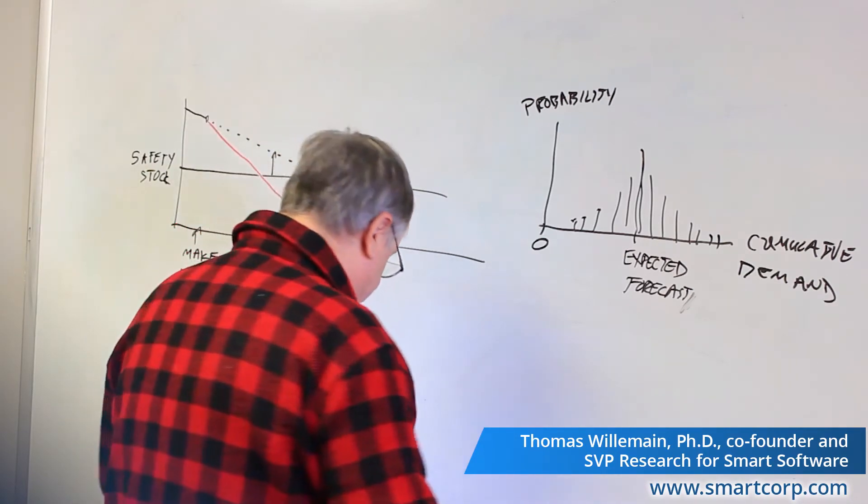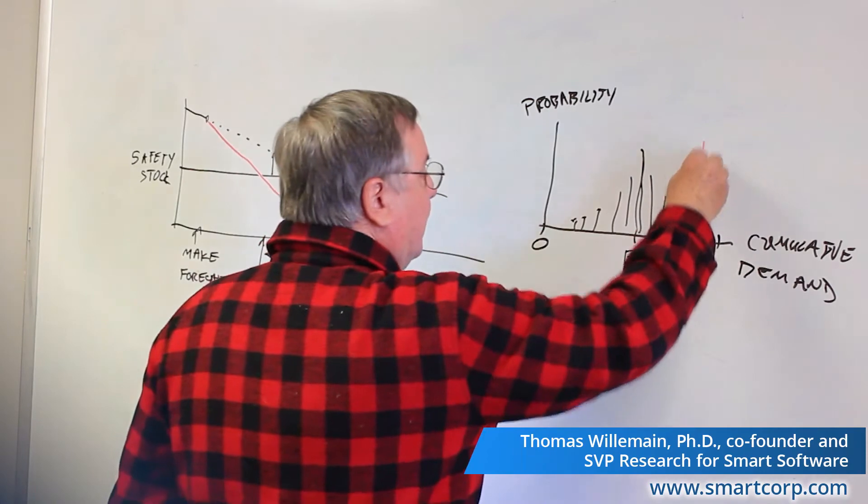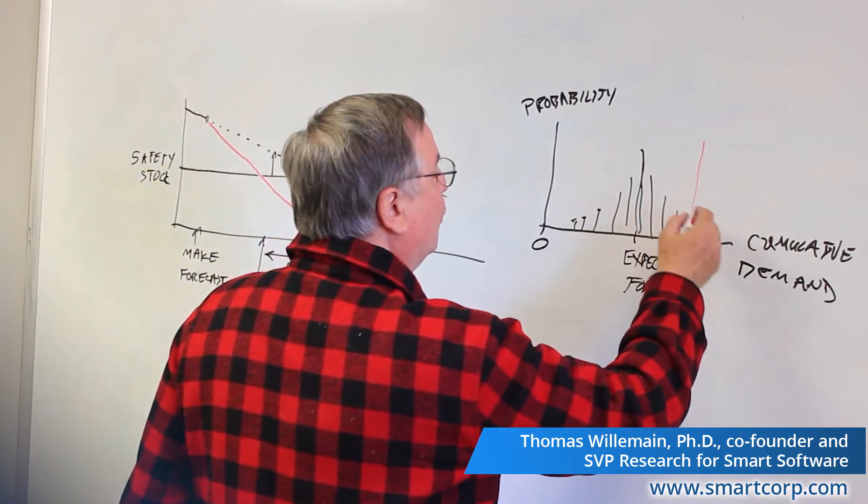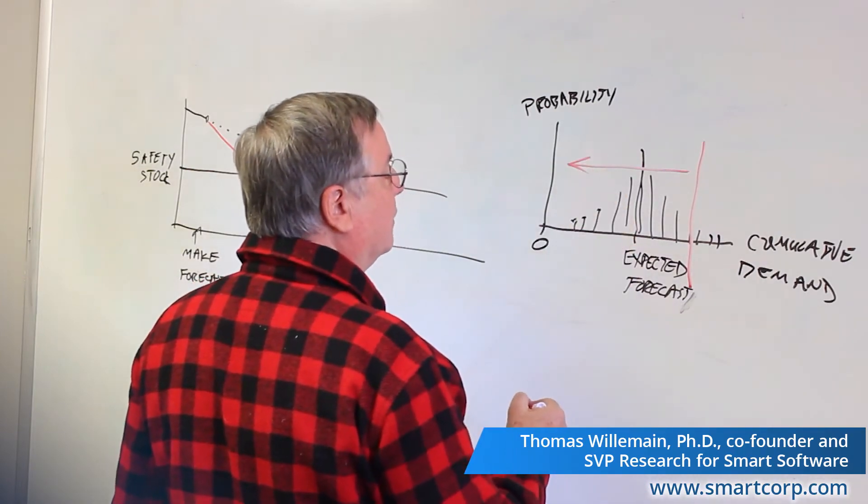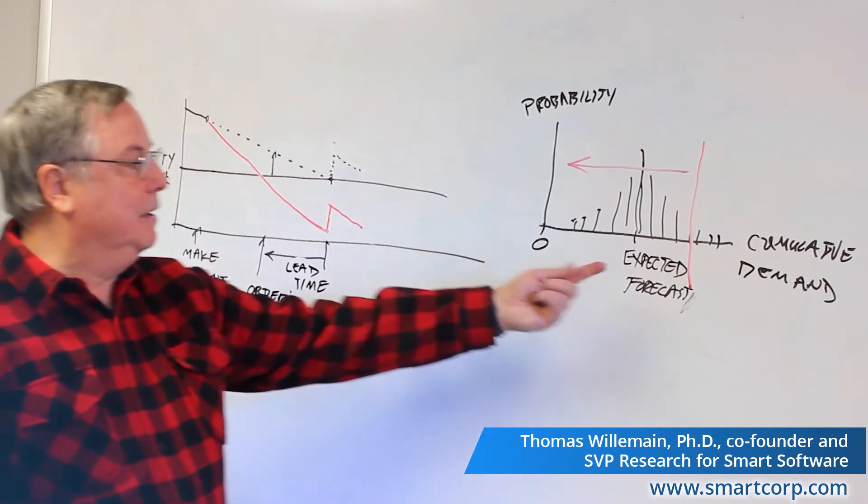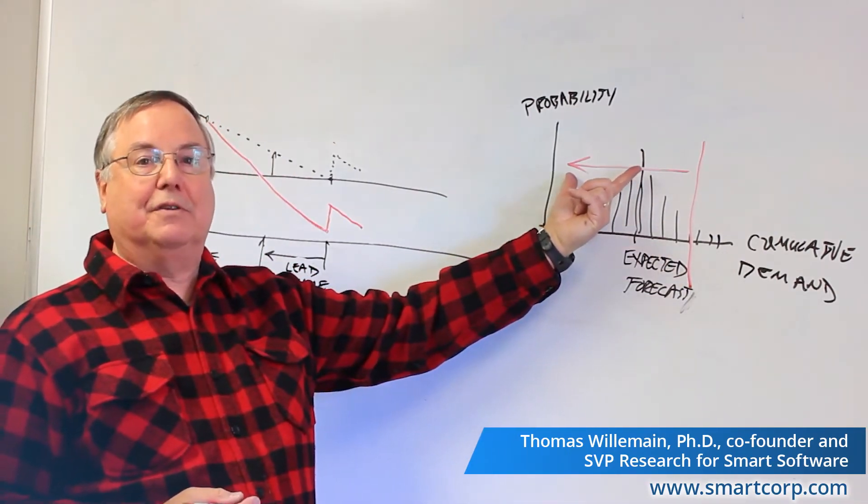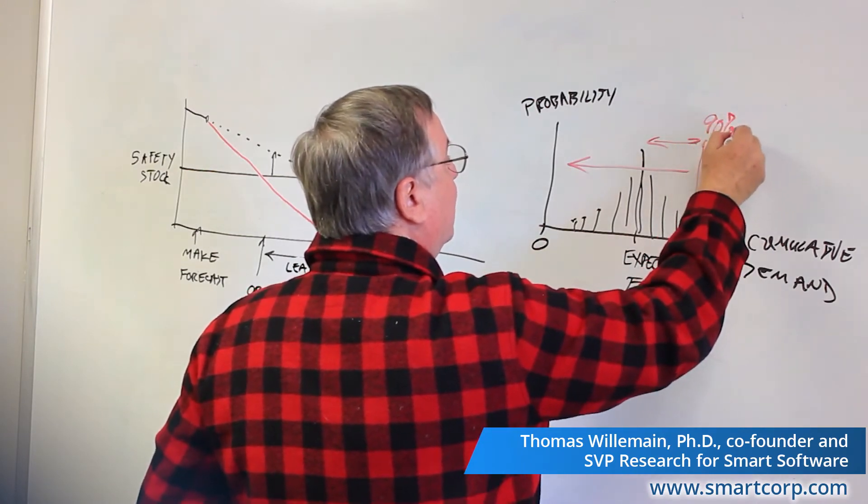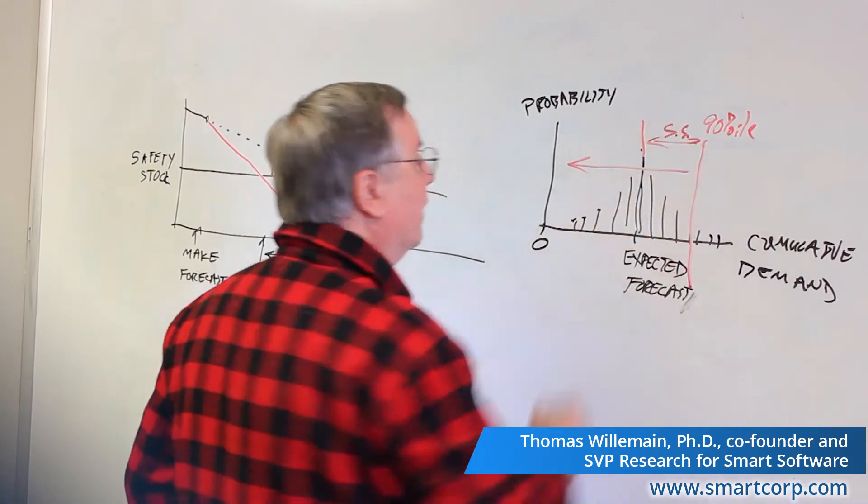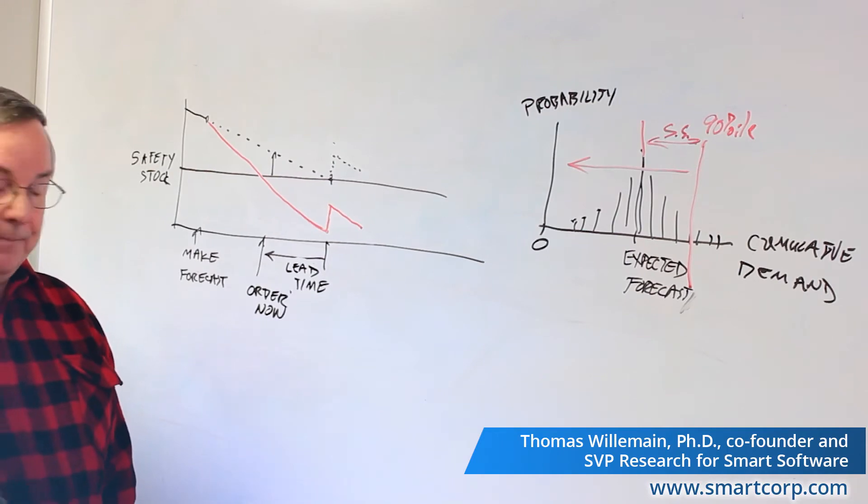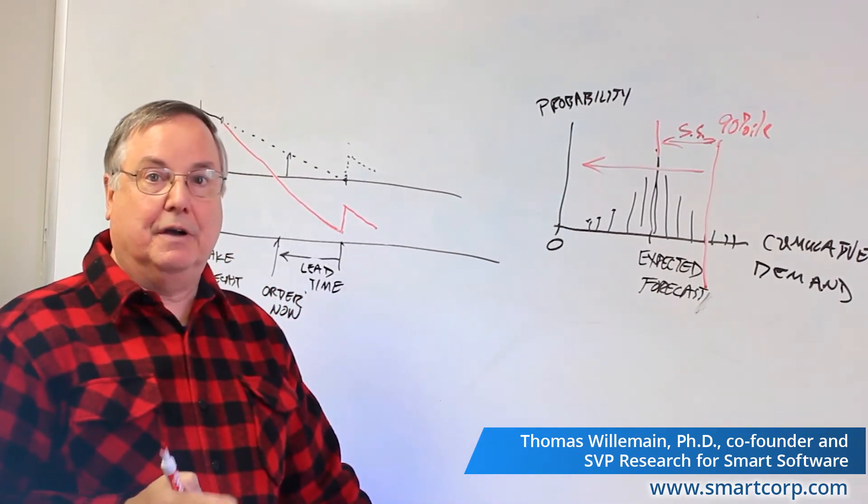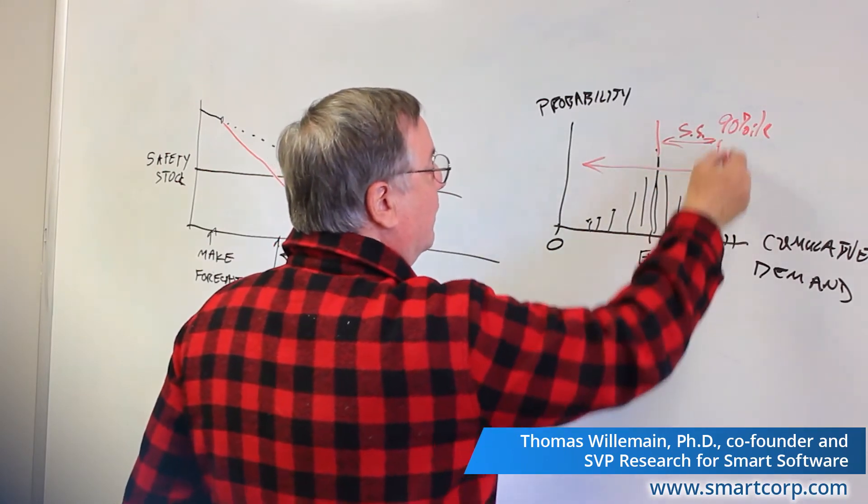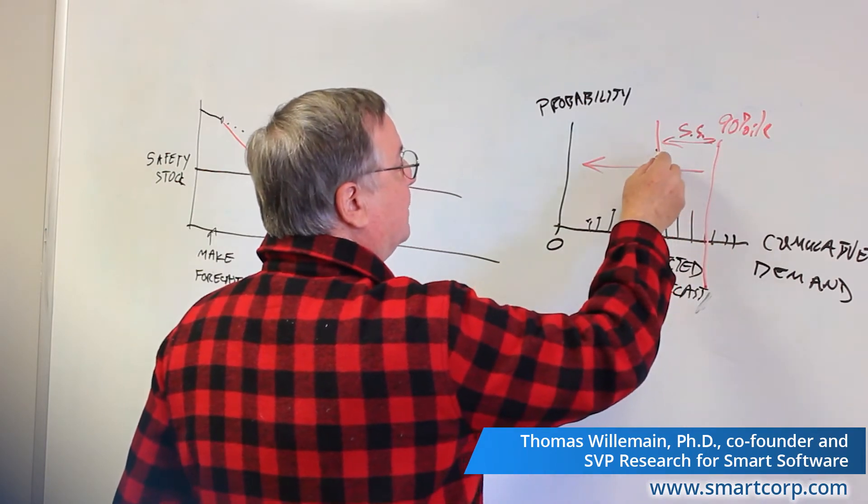And conceptually the way we work with that is we draw a line up here above the expected forecast, and we say we will try to set the safety stock at a level which will cover most of the contingencies. Maybe this red line covers 90% of the possible ways the demand could play out, and the gap between this 90%, let's say the 90th percentile, and the expected forecast, this is the safety stock. That's how we calculate a safety stock. We say there's a, we're going to accept a certain risk of stocking out, and we're going to calculate the difference between that risk level in the cumulative demand and the expected forecast, and we're going to build in this buffer. And that means that all of these scenarios, the other 10%, could actually create, would actually create stock out.